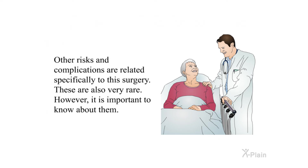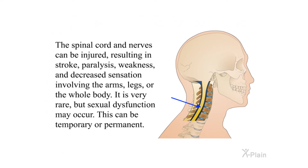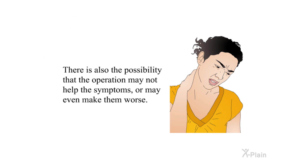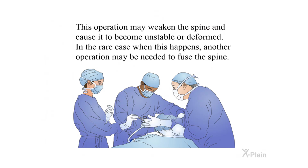Other risks and complications are related specifically to this surgery and are also very rare, but important to know about. The spinal cord and nerves can be injured, resulting in stroke, paralysis, weakness, and decreased sensation involving the arms, legs, or the whole body. Sexual dysfunction may occur and can be temporary or permanent. Fluid may also leak from around the nerves. There is also the possibility that the operation may not help the symptoms or may even make them worse. In rare cases, the operation may weaken the spine, causing instability or deformity, and another operation may be needed to fuse the spine.